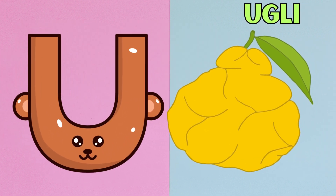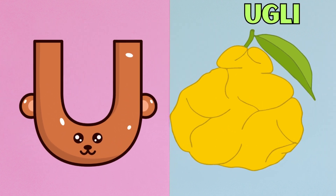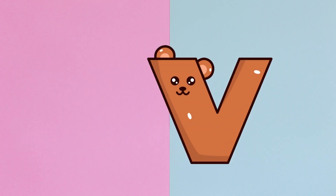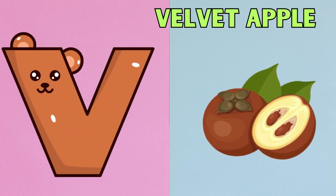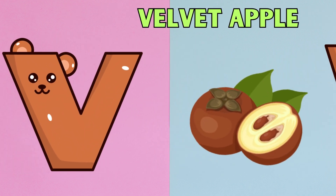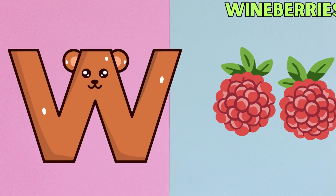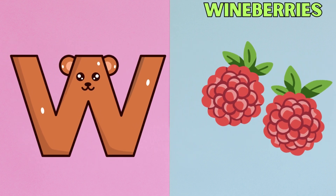U is for Ugli. U, Ugli. V is for Velvet Apple. V, V, Velvet Apple.